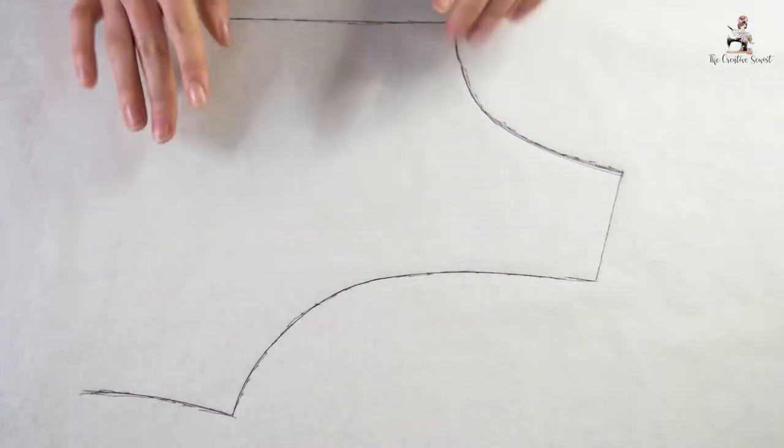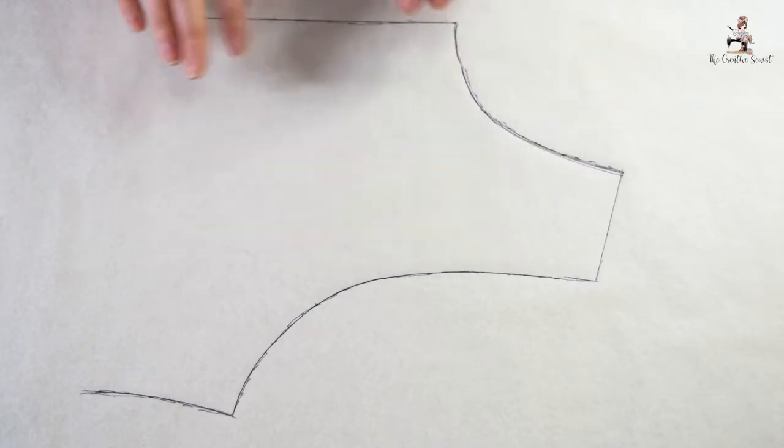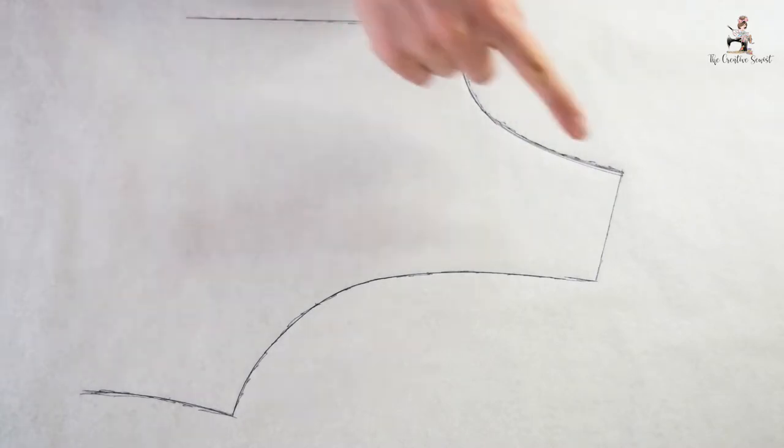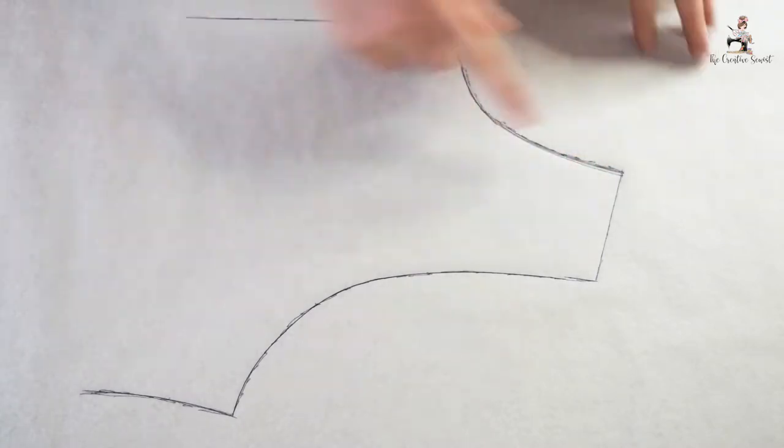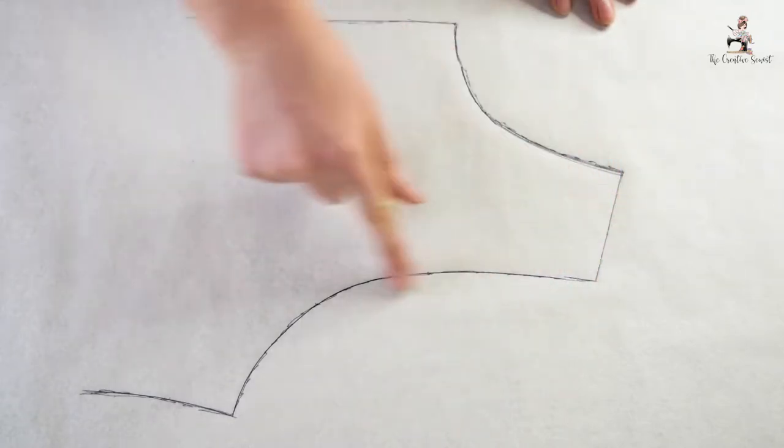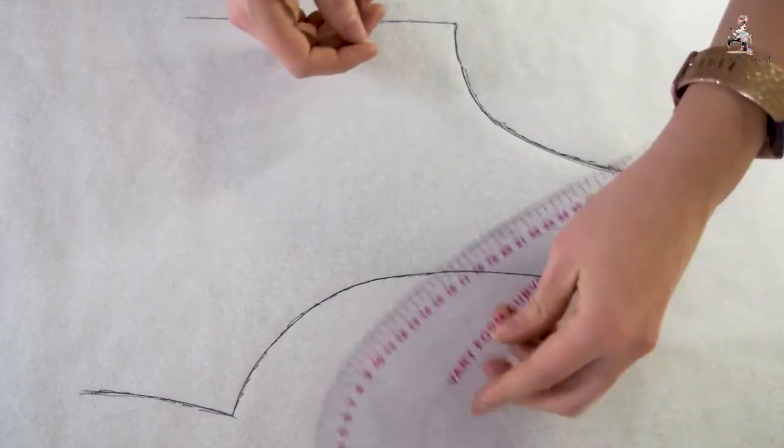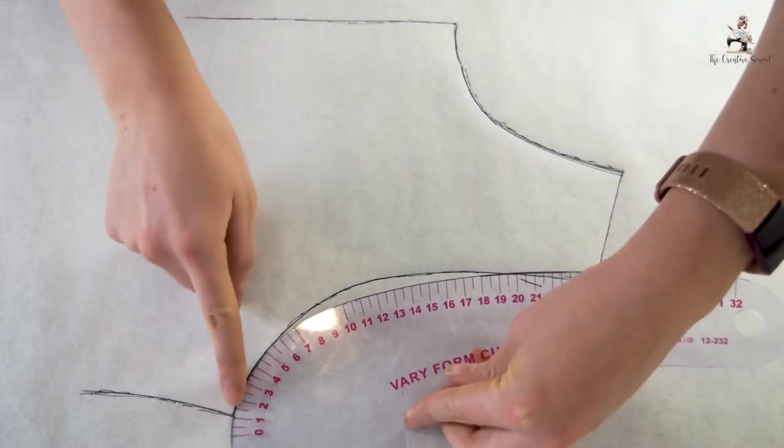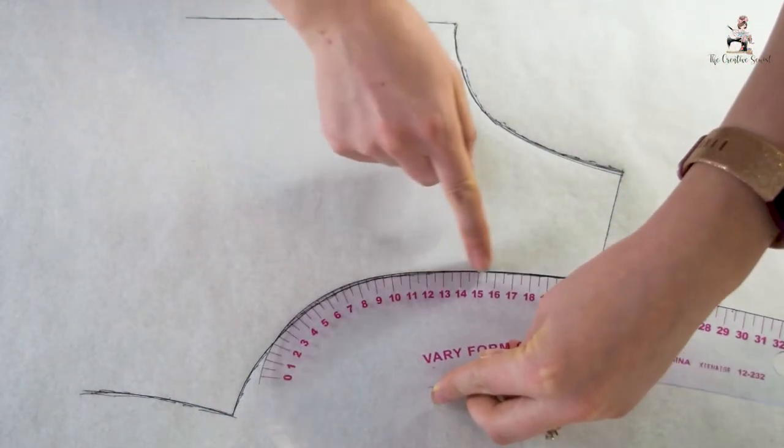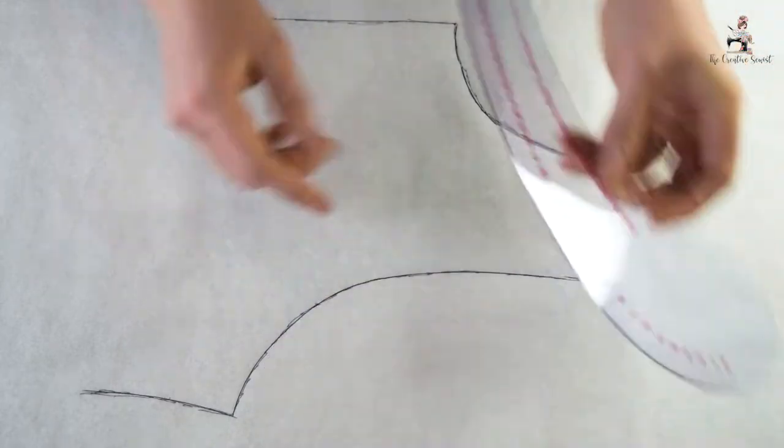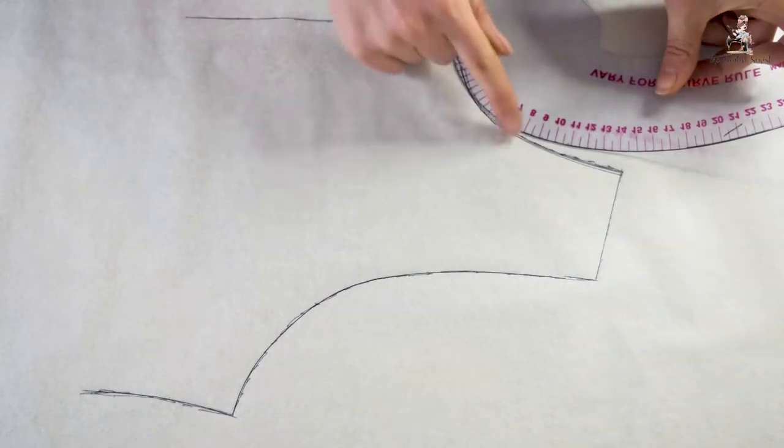For example, I have here the top part of a basic t-shirt pattern. So this is the front piece and here's the neckline and we have the armhole here. You can see how the French Curve Ruler is just a perfect fit for drawing in these nice curves. It fits well with the armhole curve and also the neckline curve.